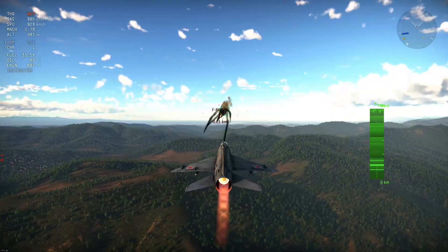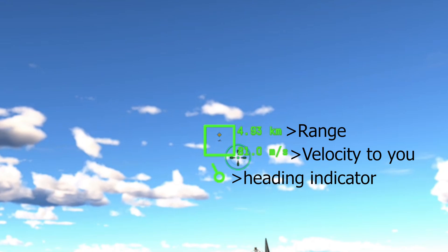When you lock a target you get a square around it with three pieces of information: range to the target, closing velocity, and a heading indicator. The velocity tells you whether the target is approaching or moving away — for example, approaching at 81 m/s. The heading indicator at the bottom of the square shows a circle with a small stick: think of it as a top-down view where the circle is the target and the stick shows the target's heading relative to you.